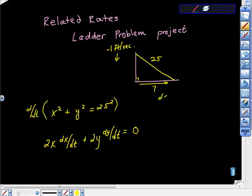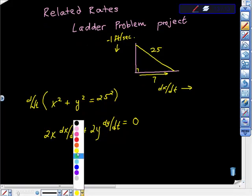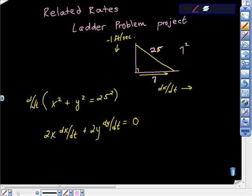Hopefully you can see that what we're looking for here is dx/dt — we're trying to figure out how fast the base is moving horizontally as time goes by. I'm going to take a sidestep for a second. If x is 7 and the ladder is 25, then using the Pythagorean theorem: 7² + y² = 25². It turns out that y is 24, and you're going to see why this is important in just a second.